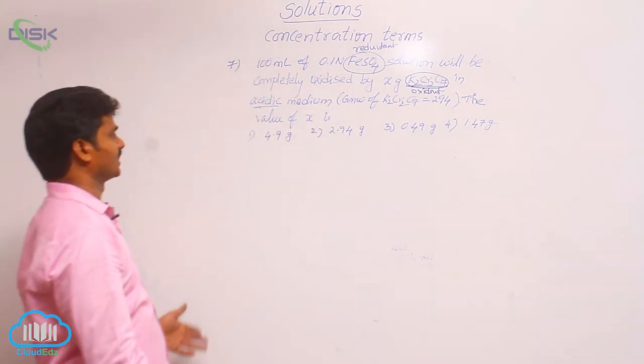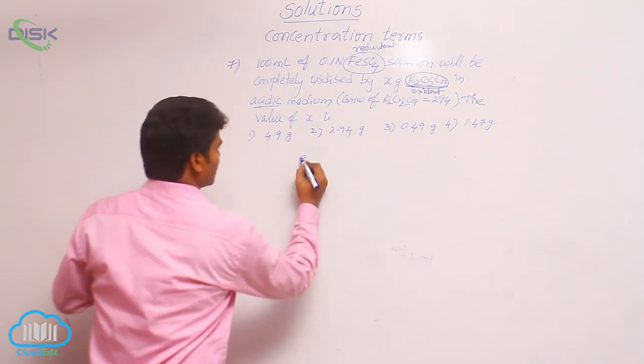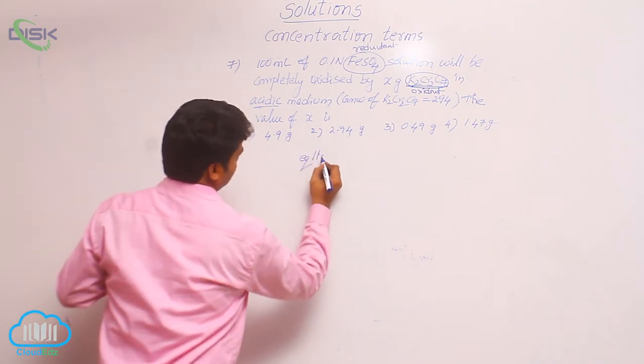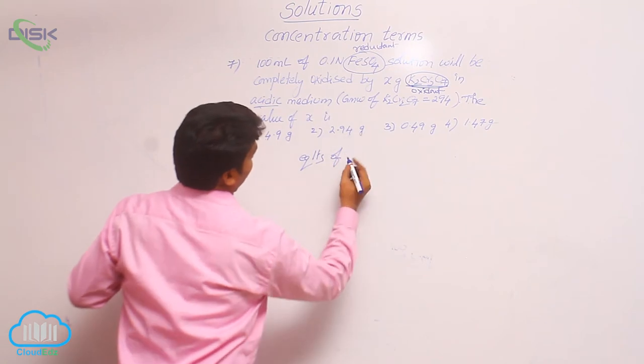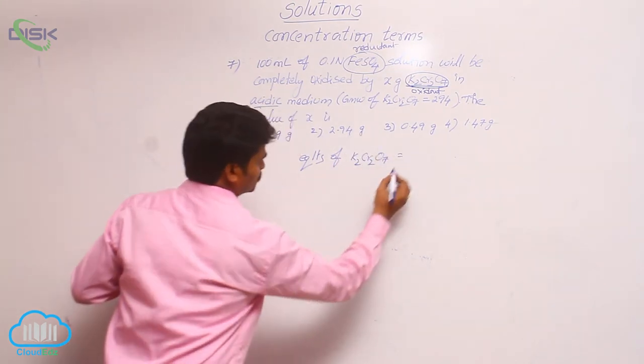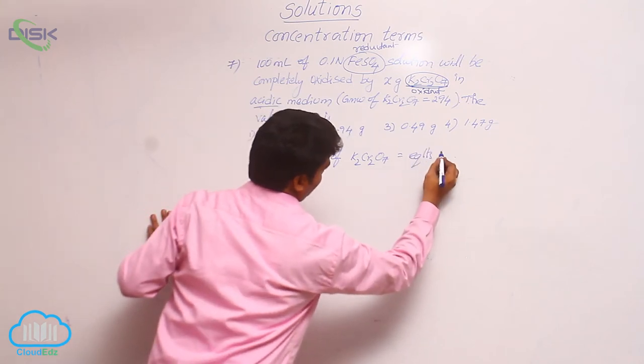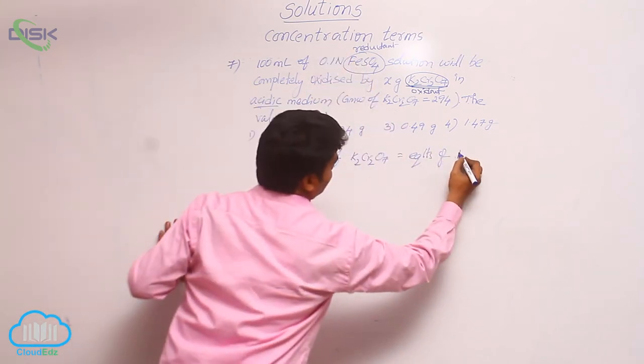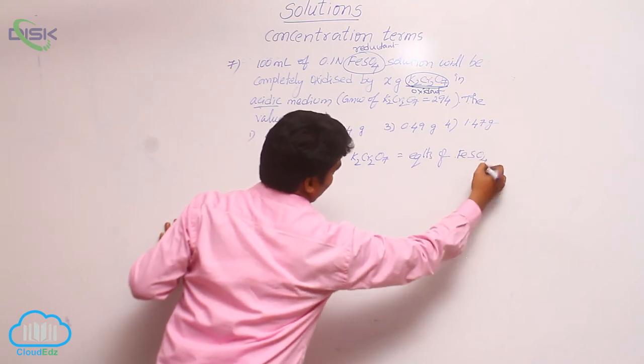In a redox reaction, whatever the reaction, equivalents of one component, that means equivalents of K2Cr2O7, equals equivalents of another substance, which is FeSO4. Use this formula.